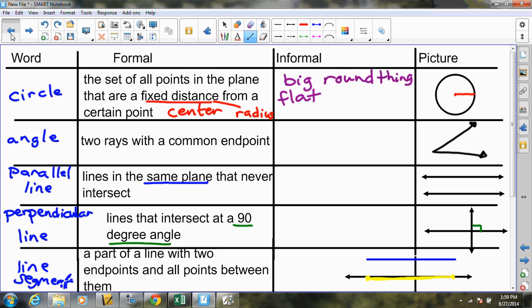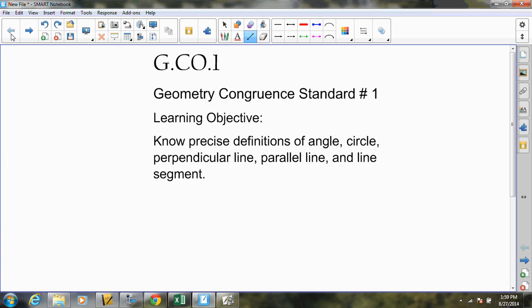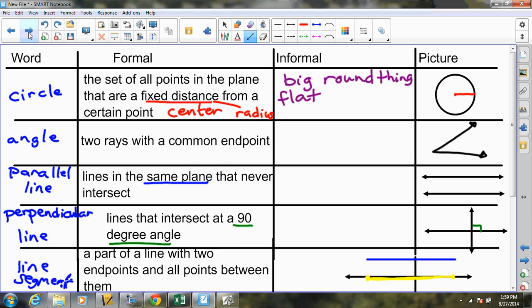If you want to be able to be proficient in geometry congruence standard number one, you just got to know these five words. You will need to know the precise formal definition and you should be able to draw the picture. You should be able to recognize these pictures.